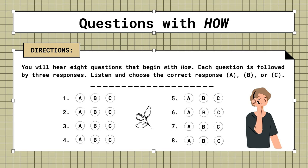3. How about a cup of coffee? A. I'm not sure how. B. Actually, I'd prefer green tea. C. Sorry, I'll clean up right away.